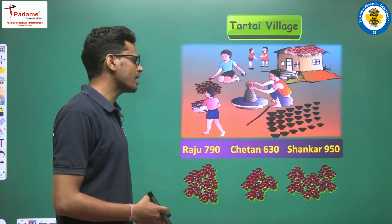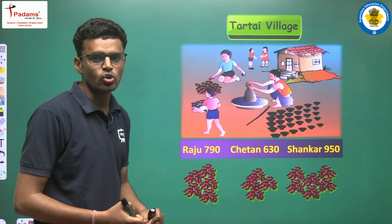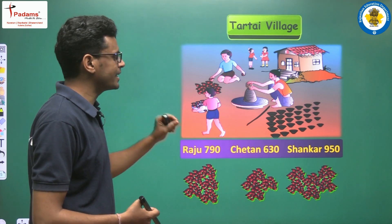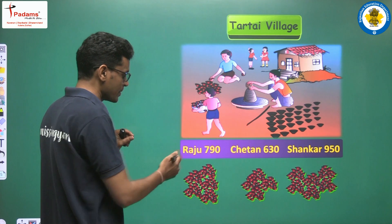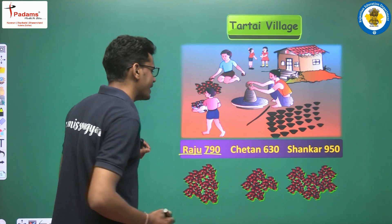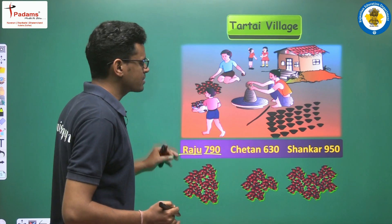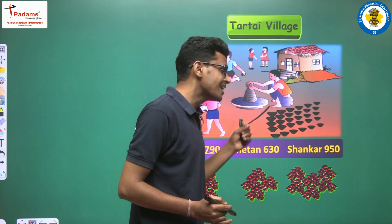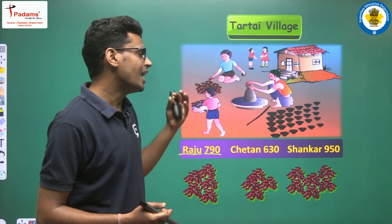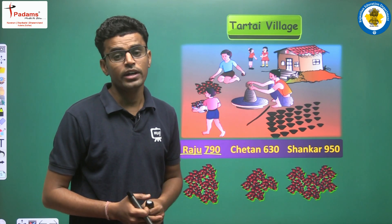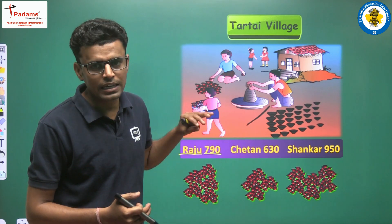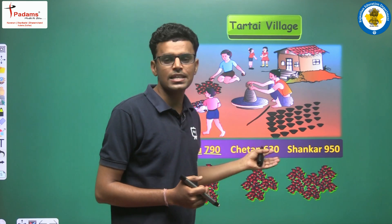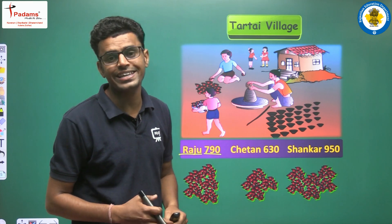In this village, they made lamps from the soil — so they are making lamps. The amount of lamps created is mentioned. Raju's family creates 790 lamps, Chetan's family creates 630 lamps, and Sankar's family creates 950 lamps. These are all different lamp counts: 790, 630, and 950. The amount for each family has been noted and here you can see the image.